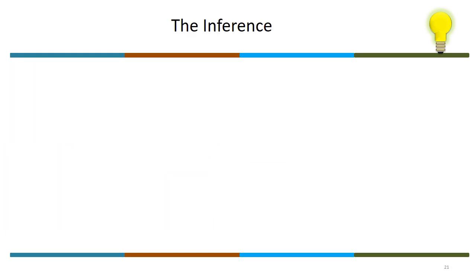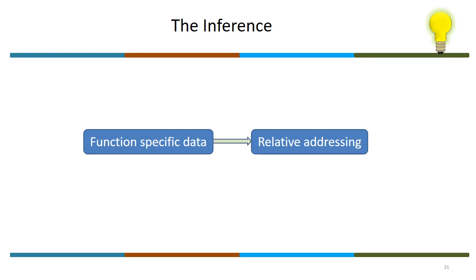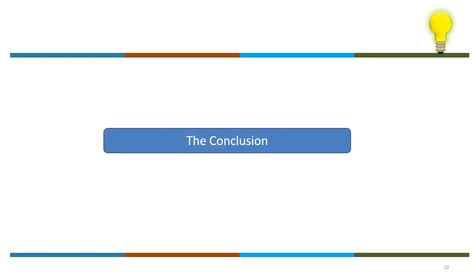So what is the inference? How does the compiler generate an address? Using relative addressing — relative to the start or end of the stack frame. Since the stack frame size is fixed, the compiler can generate a relative address with respect to the stack frame. But compiler alone cannot do this; there must be support from the system. We will see how the system supports this in the next session.